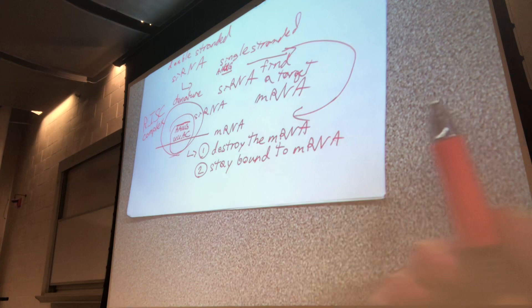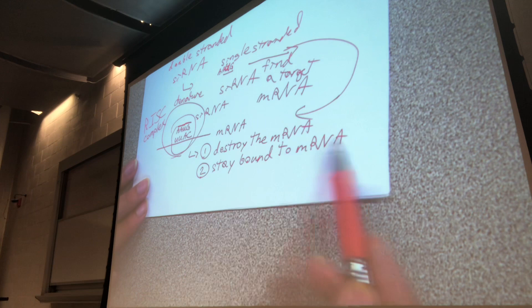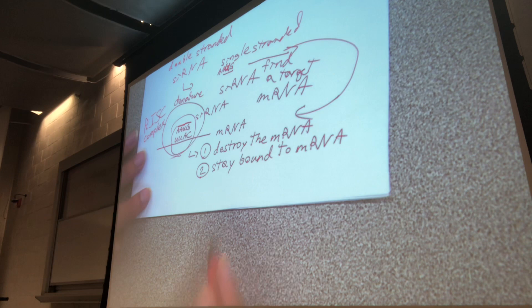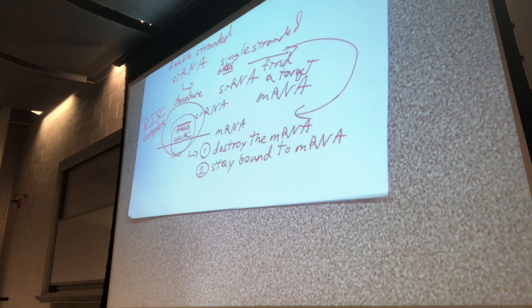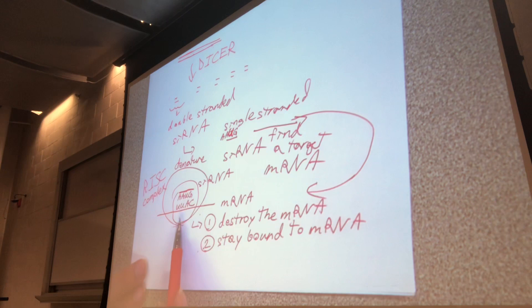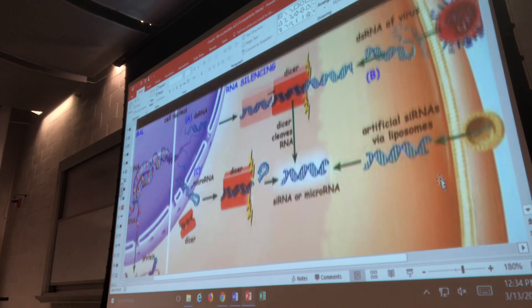If the RISC complex stays bound to the mRNA, this huge structure makes it impossible for a ribosome to pick up the mRNA and translate it into protein. So two possibilities: one, it destroys the target mRNA, making translation definitely impossible; or two, it stays attached to the mRNA making it impossible for a ribosome to translate it into protein. Either way, you are unable to translate the mRNA into a protein.